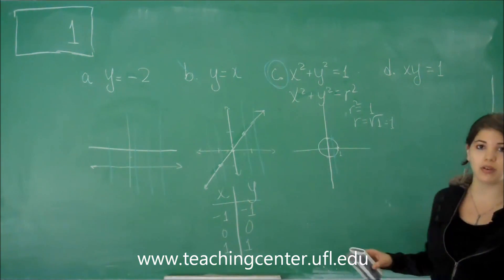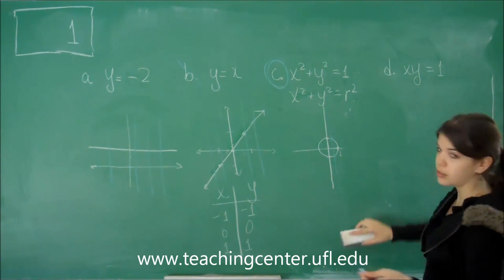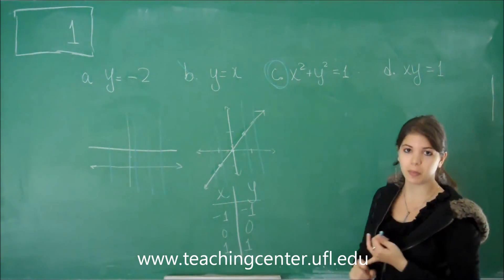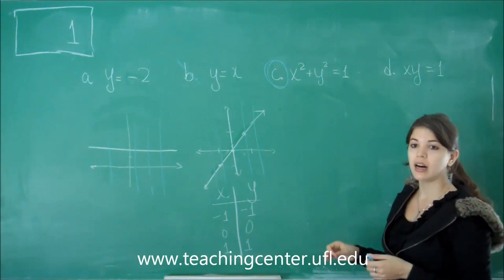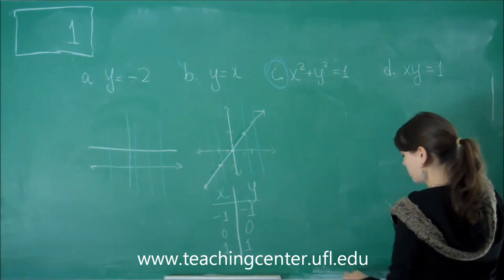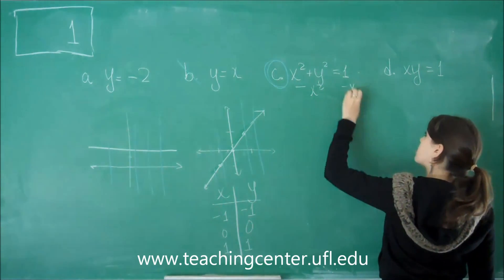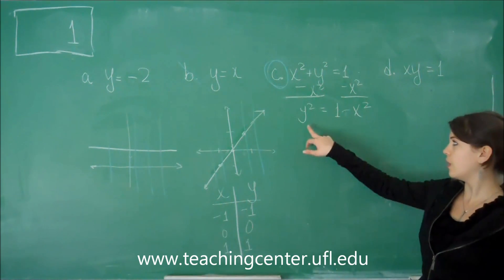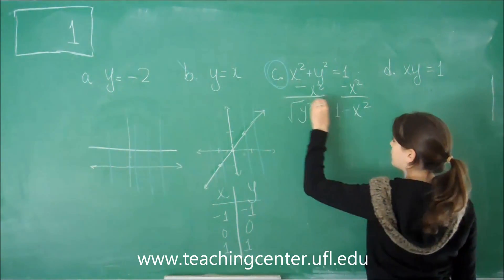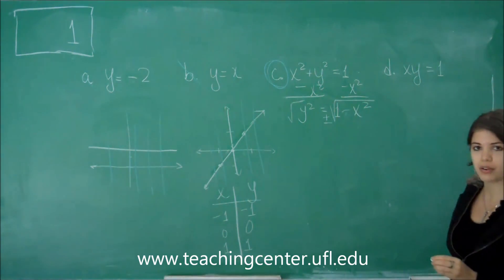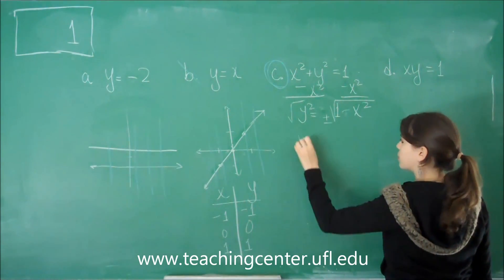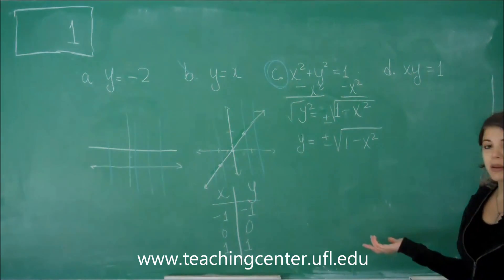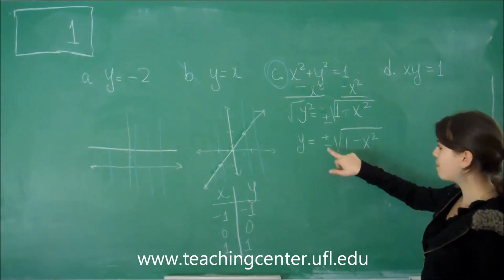Now I want to show you something else you could do if you don't remember this equation for a circle. If you do remember, just go ahead and fast forward to see the solution for d. One other thing you could do is solve for y to try to plot this. I'm going to subtract x squared from both sides. And I get y squared equals 1 minus x squared. And to isolate y, I need to do the square root of both sides. So this becomes, and this is important, plus and minus square root of 1 minus x squared. So then I get y equals plus and minus square root of 1 minus x squared.